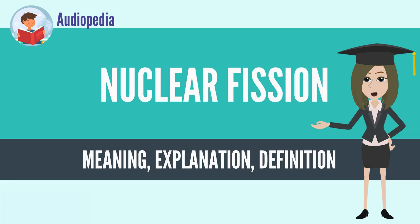Nuclear fission of heavy elements was discovered on December 17, 1938 by German Otto Hahn and his assistant Fritz Strassmann, and explained theoretically in January 1939 by Lise Meitner and her nephew Otto Robert Frisch.